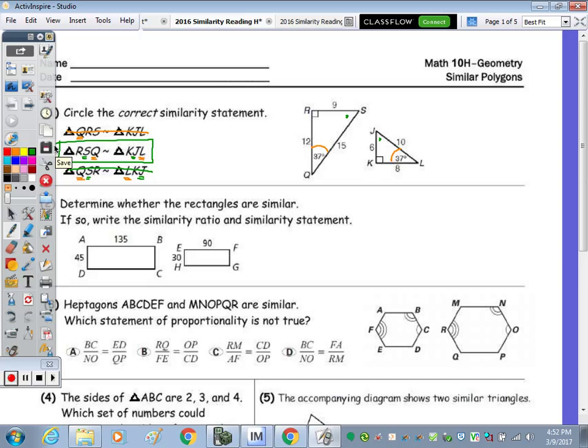Number two, determine whether they are similar. So are corresponding sides proportional? So 45 to 30, those are the two smaller numbers. So does 45 to 30, does that ratio equal 135 to 90? I went left to right and then left to right for the second. And both of those fractions reduce to 3 halves. So the answer is yes, with a similarity ratio of 3 to 2.